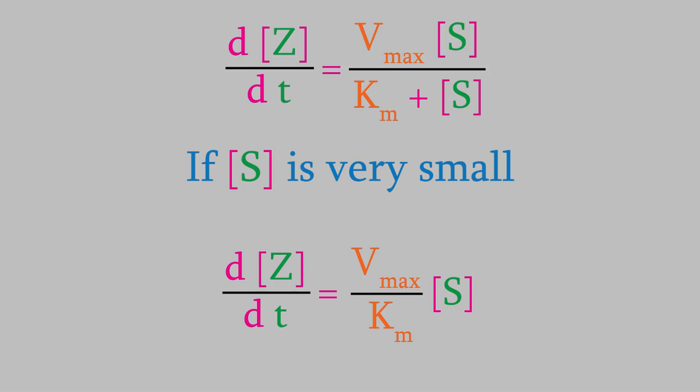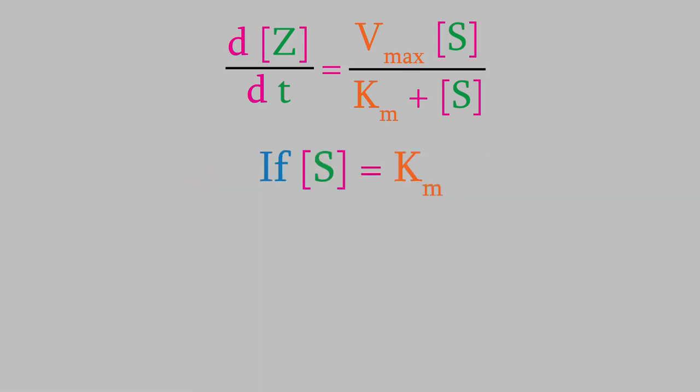And finally, what happens if S is equal to Km? In that case, the denominator is equal to 2 times S, and the fraction simplifies to Vmax over 2.